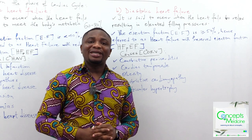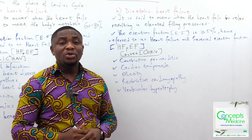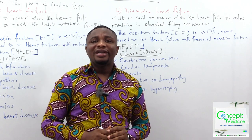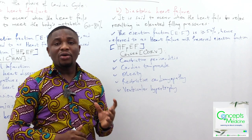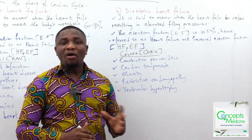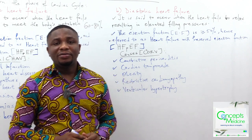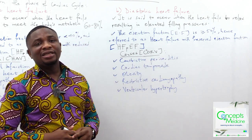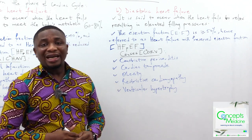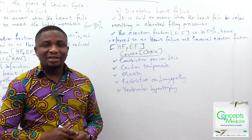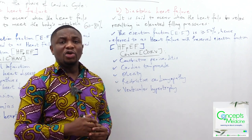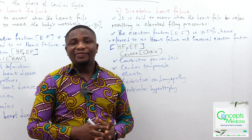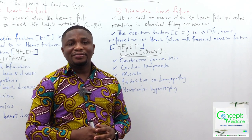For the causes of diastolic heart failure, we use another easy mnemonic called the 'CURVE': constrictive pericarditis, cardiac tamponade, obesity, restrictive cardiomyopathy, and ventricular hypertrophy.